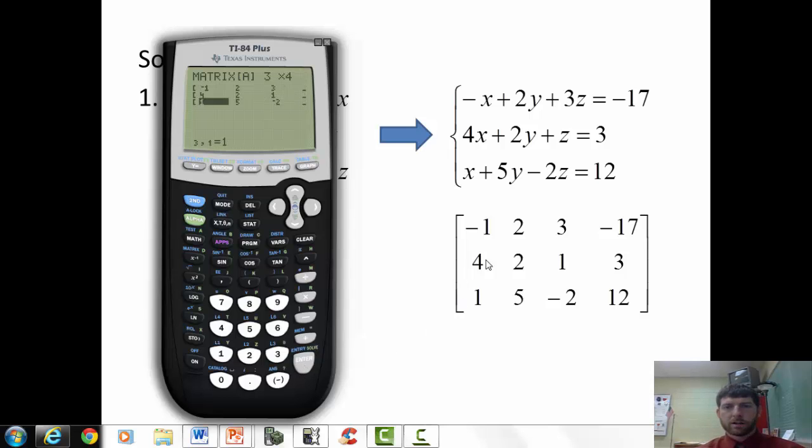So, again, check it. Negative 1, 4, 1 for the first column. 2, 2, 5, second column. 3, 1, negative 2. Negative 17, 3, and 12.